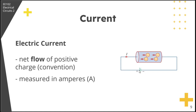The positive charges are pushed from the positive terminal to the negative terminal. The electromotive force pushes the negative charges from the negative terminal toward the positive terminal — so the electrons in the wire are pushed by the source.